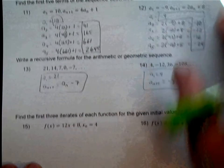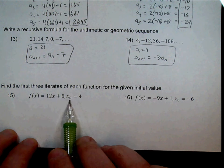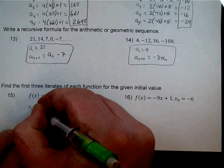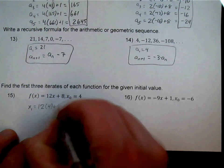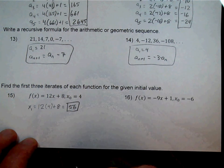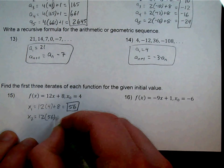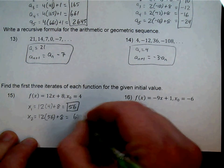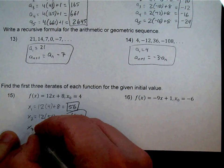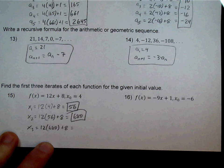Numbers 15 and 16 involve finding iterates. For number 15, the initial value is 4. To get x sub 1, plug in 4 into the function: 12 times 4 plus 8, which gives 48 plus 8, equals 56. For x sub 2, plug in 56: 12 times 56 plus 8, which gives 680. For x sub 3, plug in 680: 12 times 680 plus 8, giving 8,168.